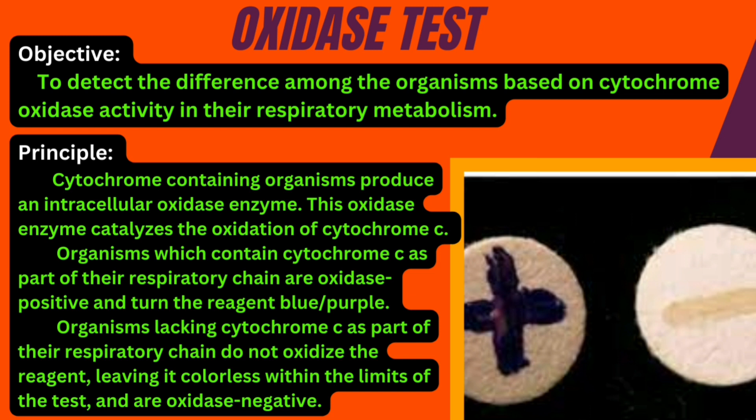Cytochrome C oxidase, or complex 4, is a large transmembrane protein complex. It is found in bacteria, archaea, mitochondria, and eukaryotes. If you look at bacteria, all bacteria where it is present can be differentiated.